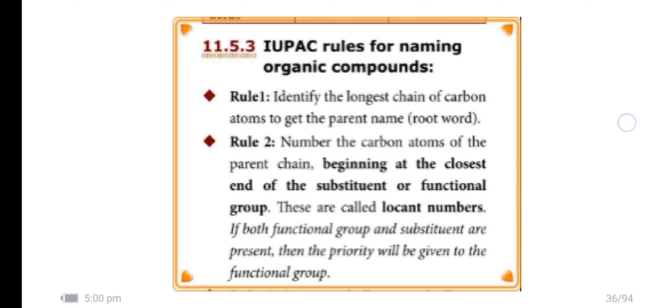Rule 2 - Number the carbon atoms of the parent chain beginning at the closest end of the substituent or functional group. These are called locant numbers. If both functional group and substituent are present, then the priority will be given to the functional group.